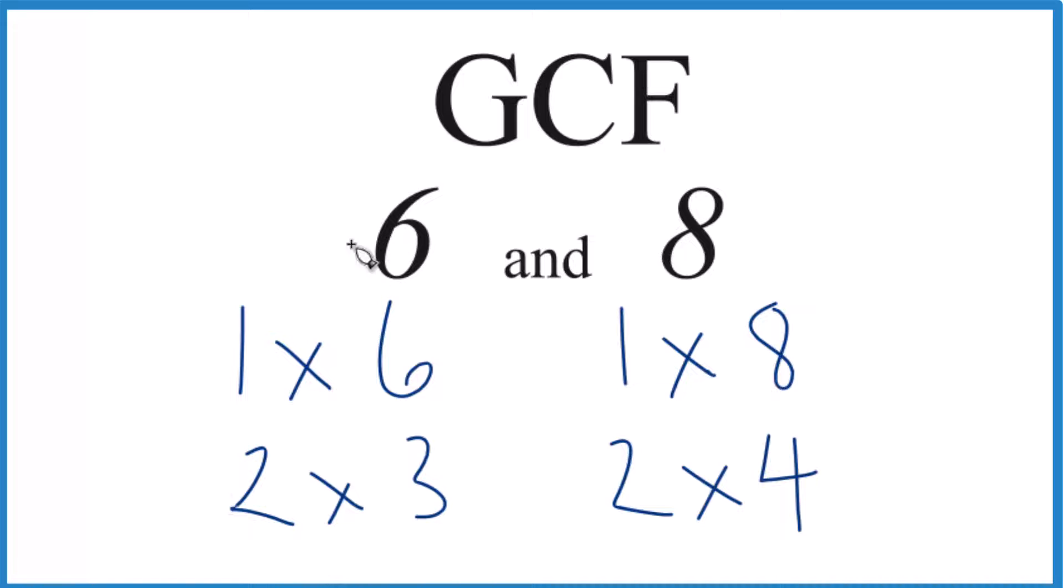So these are the factors for 6 and 8. Let's find the common factors. So 1, both of them have 1. 2, 2 is a common factor. 2 goes into 6 and 2 goes into 8 evenly, but that's it.